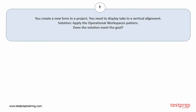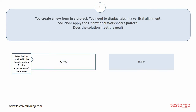Question number 1. You create a new form in a project. You need to display tabs in a vertical alignment. Solution: Apply the operational workspaces pattern. Does the solution meet the goal? Your options are: A. Yes. B. No. The correct answer is option A.